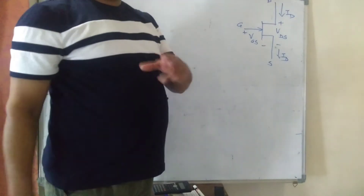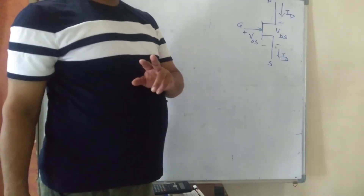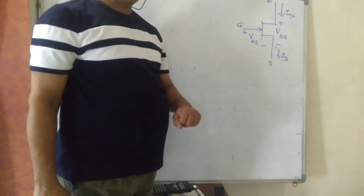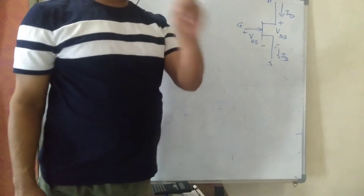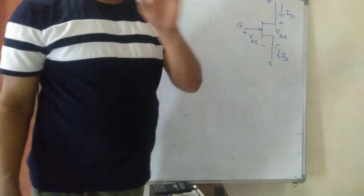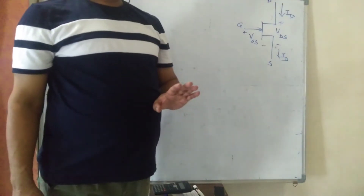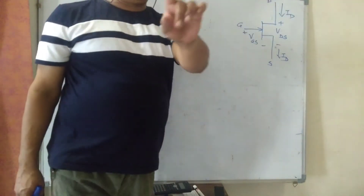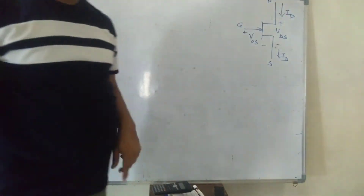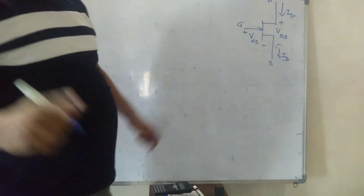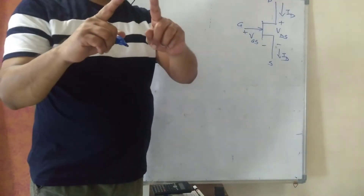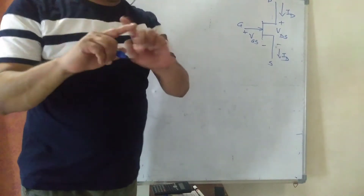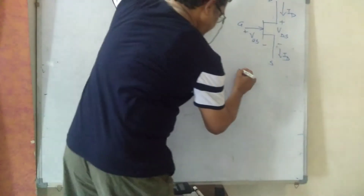While determining the Q point of FET, we have to write two equations — equation number 1 and equation number 2. Then you have to put equation number 2 into equation number 1 and solve. Equation number 1 is fixed and constant.